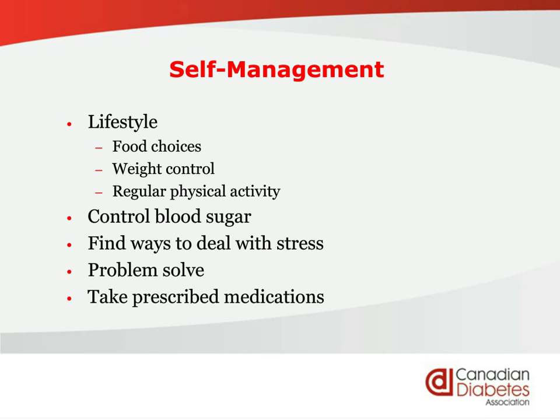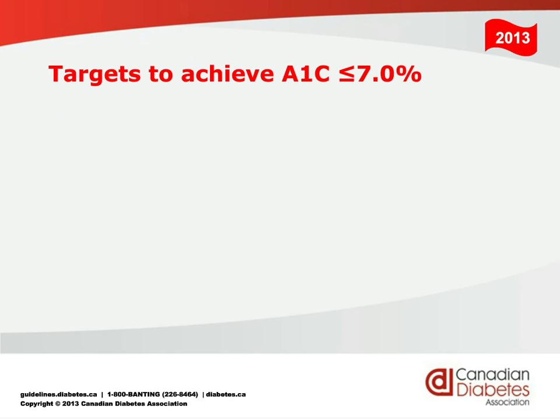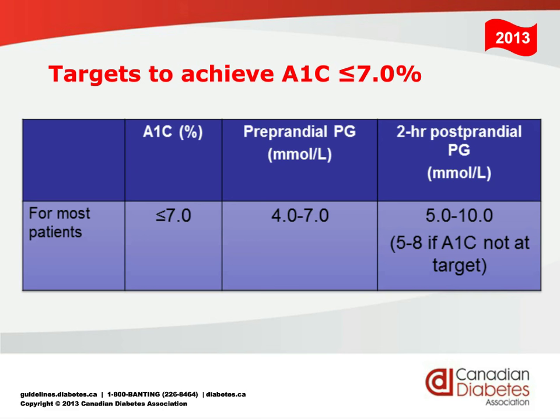The targets for blood sugar control: aim for an A1C — the three-month lab test your doctor sends you for — of less than 7%. Get your blood sugars before meals to be in the 4 to 7 millimoles per liter range. Check your blood sugar two hours after your meal as well, aiming for 5 to 10 on your blood glucose meter. Or if you're not at an A1C of 7% or less, then you're aiming for a post-meal target of 5 to 8.